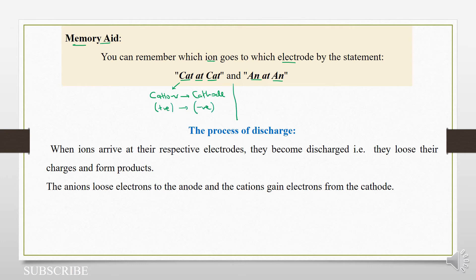And 'an' — we mean anions — they go to the anode. Anions go to the positive electrode.